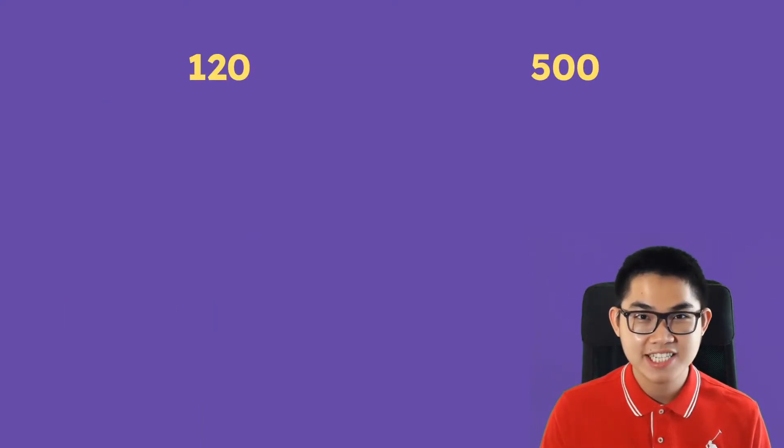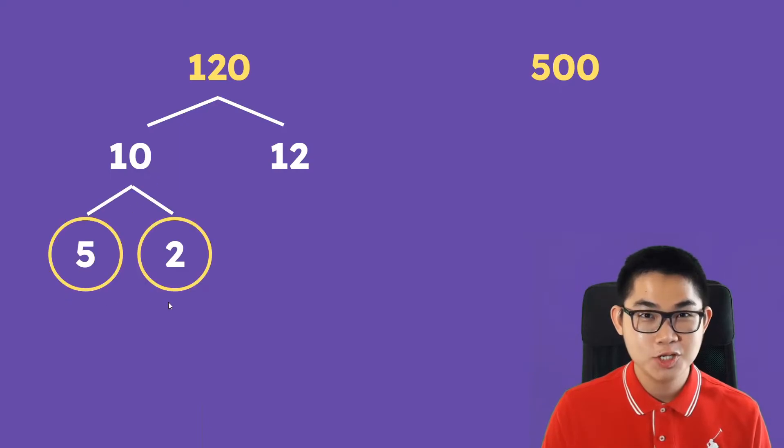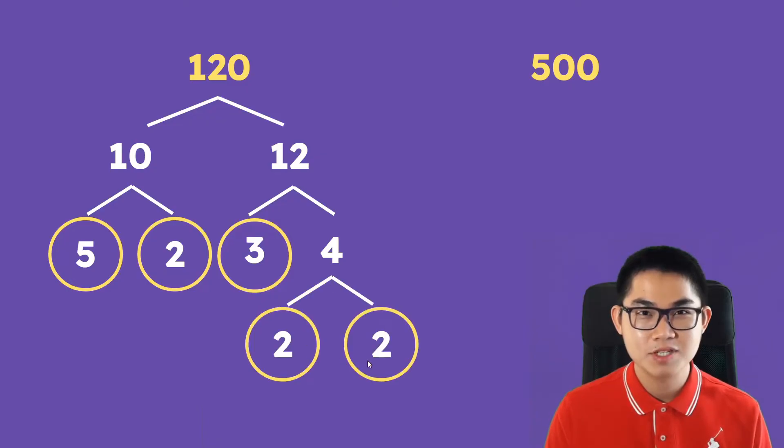So 120 is the same as 10 times 12, and 10 is the same as 5 times 2. Because both of these are prime numbers I want you to circle them. As for 12, 12 is 3 times 4 and 4 is 2 times 2.